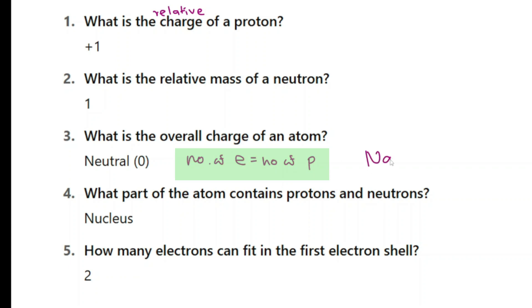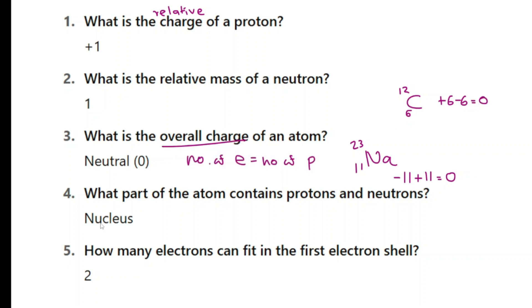For example, if you think about sodium (11, 23), there will be 11 electrons giving minus 11, and 11 protons giving plus 11, so the overall charge is zero. If you think about carbon 6, 12: six protons, six electrons, and the overall charge is zero. What part of the atom contains protons and neutrons? It's obviously the nucleus. The nucleus has protons and neutrons, and electrons are in the shells around it.